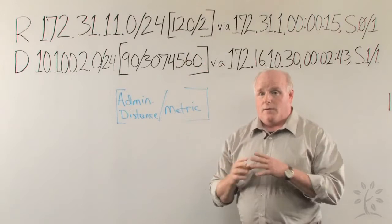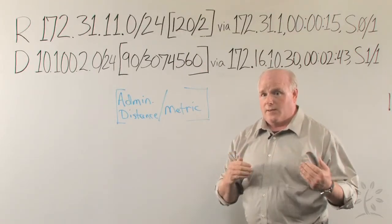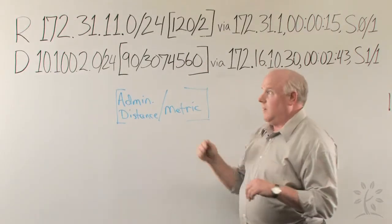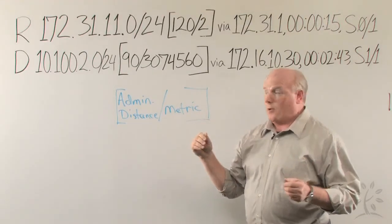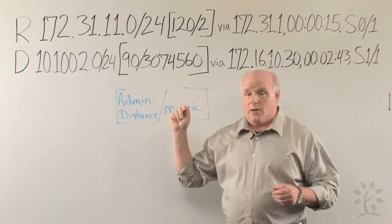120 is the default for RIP, and other protocols have different administrative distances. The more reliable the protocol, or the more sophisticated the protocol, the lower the administrative distance.